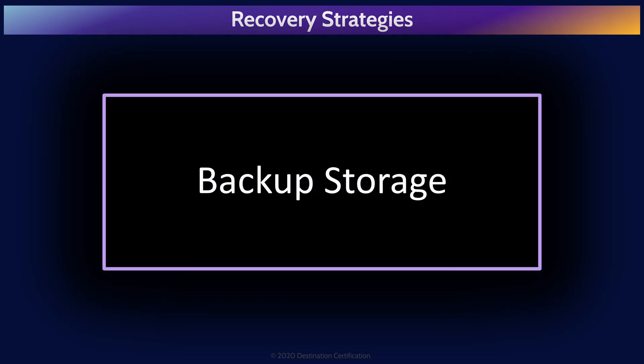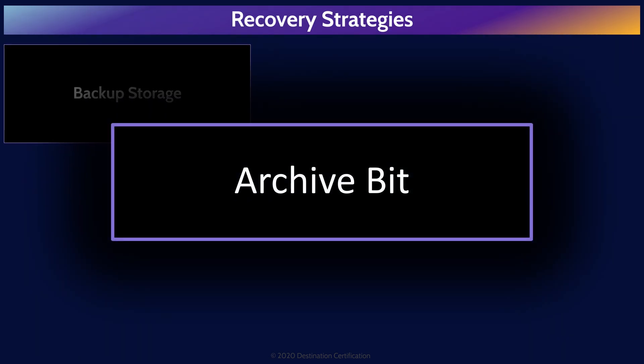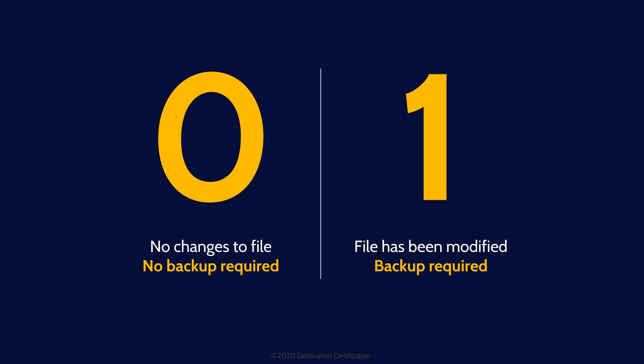We'll start with backup strategies for data — various methods we can use to back up data in the event of hardware failures. But before we get into discussing the strategies, let's talk about an important bit known as the archive bit. Metadata is data about data, and the archive bit is an example of metadata. Every file on a computer has an archive bit associated with it. If the archive bit is set to zero, no backup is required. An operating system will automatically flip the archive bit to one whenever a file is created or modified, meaning the file needs to be backed up.